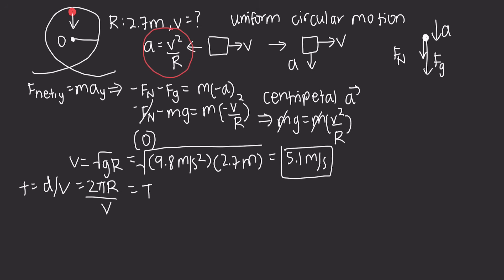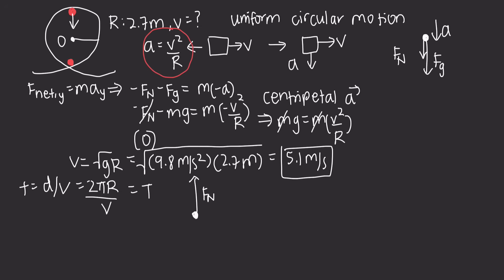At the bottom of the loop's motion, the free body diagram looks different. The normal force points upward while the force of gravity points downward, with the normal force greater than the force of gravity. The centripetal acceleration is now directed upward, toward the center of the circle. The net force in the free body diagram must always point in the direction of the centripetal acceleration — always toward the center of the circle.